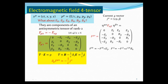F_μν is written with lower indices. If I need upper indices, I use the inverse metric to raise them: I contract index alpha to become upstairs μ, and contract index beta to become upstairs ν, giving F^μν. Because eta_μν is diag(-1, 1, 1, 1), this basically changes the sign of the first row and first column, while the rest does not change.